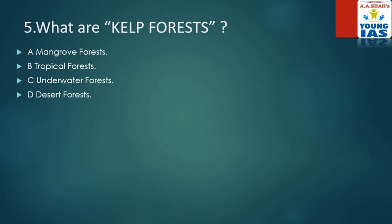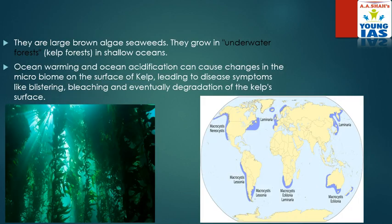Now see the next and last question: what are kelp forests? Kelp forests are a type of forest usually found underwater. So the answer is underwater forest. You can see that these are the kelp forests. They are large brown algae seaweeds that grow in underwater forests in shallow oceans. Ocean warming and ocean acidification can cause changes in the microbiome on the surface of kelp, leading to disease symptoms like bleaching and eventually degradation of the kelp forest.